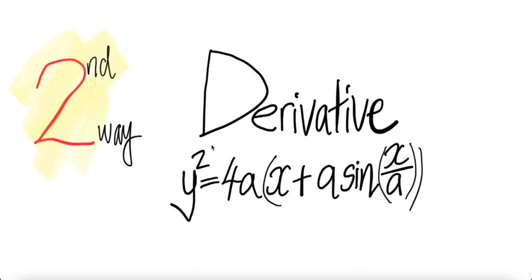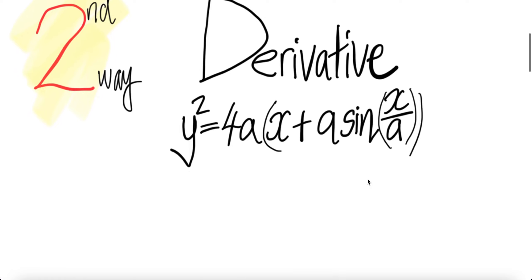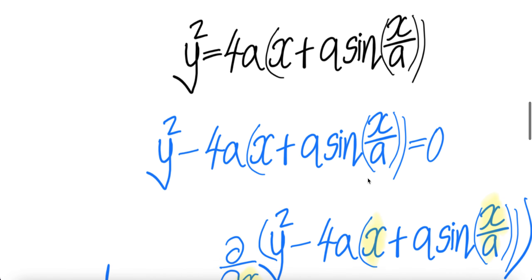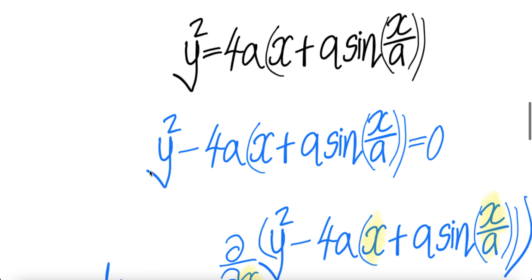Let us look at the second way to get the derivative of y squared is equal to 4a times x plus a times sine x over a. Move this to the left-hand side, you get that.